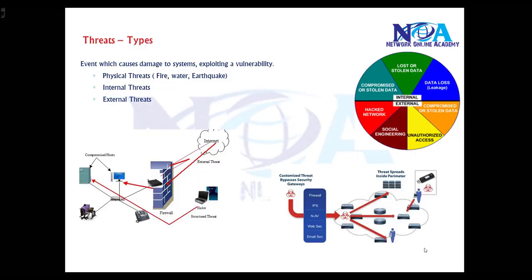In this video we will try to understand different types of threats. There are mainly three types: physical threats, which relate to things like fire or earthquake; internal threats, which come from within the same network; and external threats, which come from outside the network.